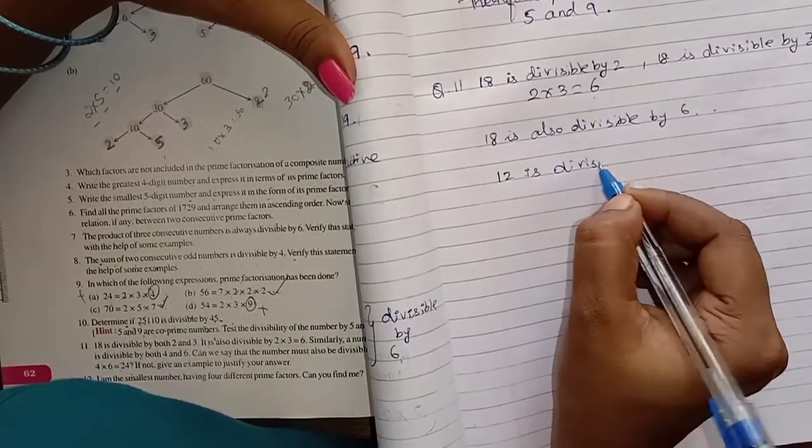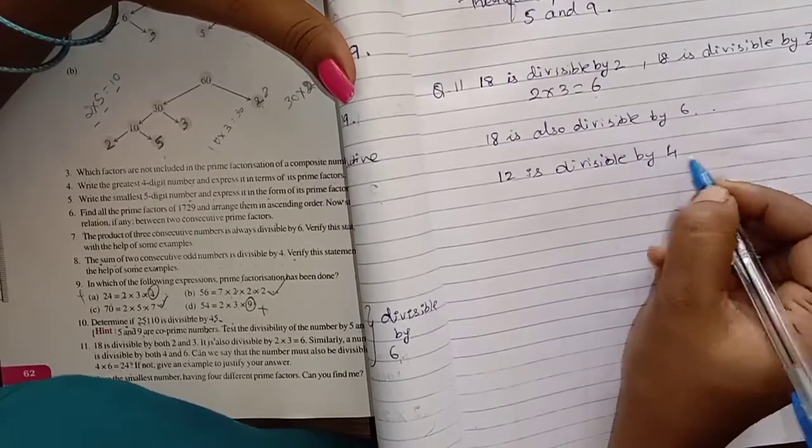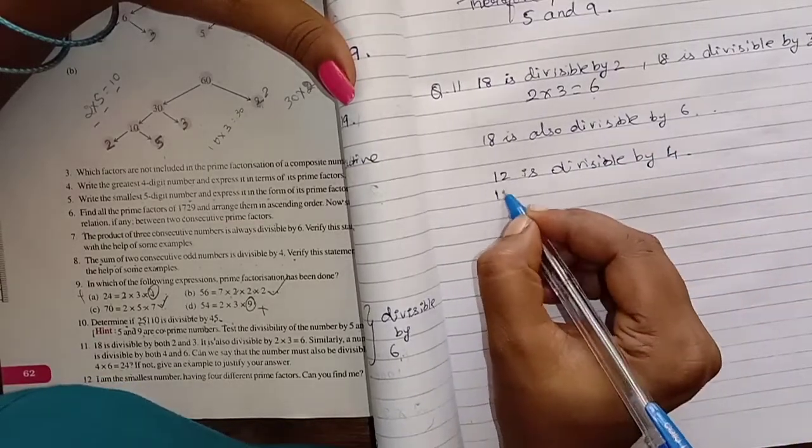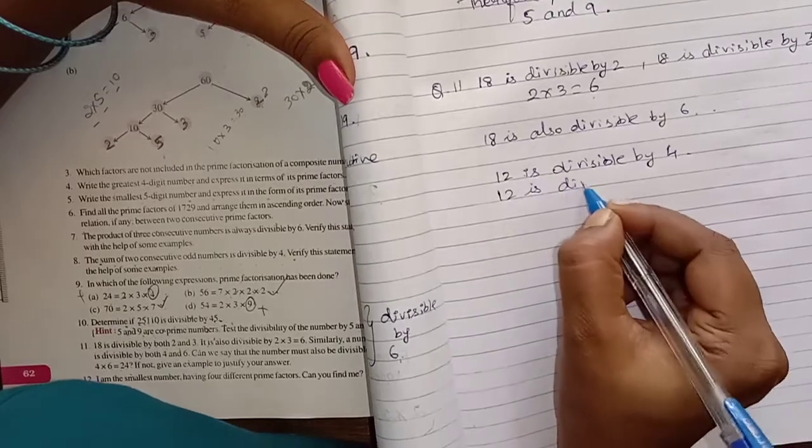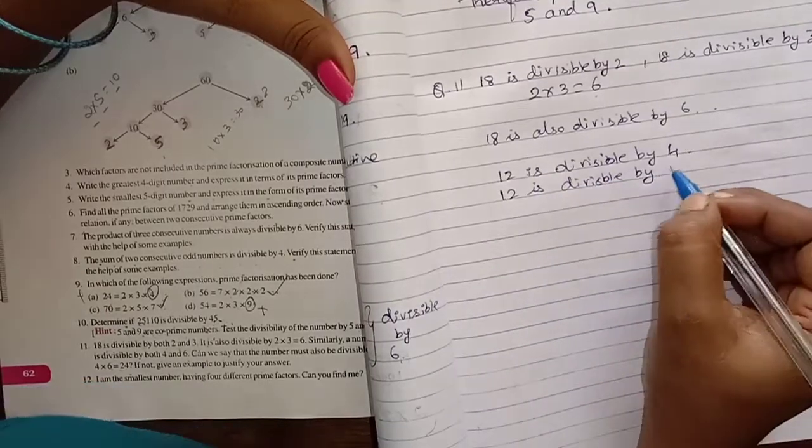We will write 12. 12 is divisible by 4. Next, 12 is divisible by 6.